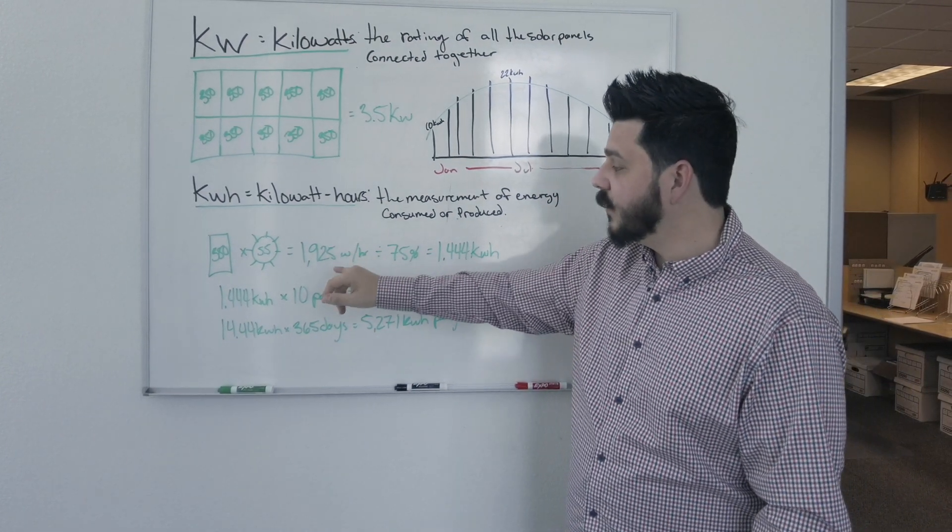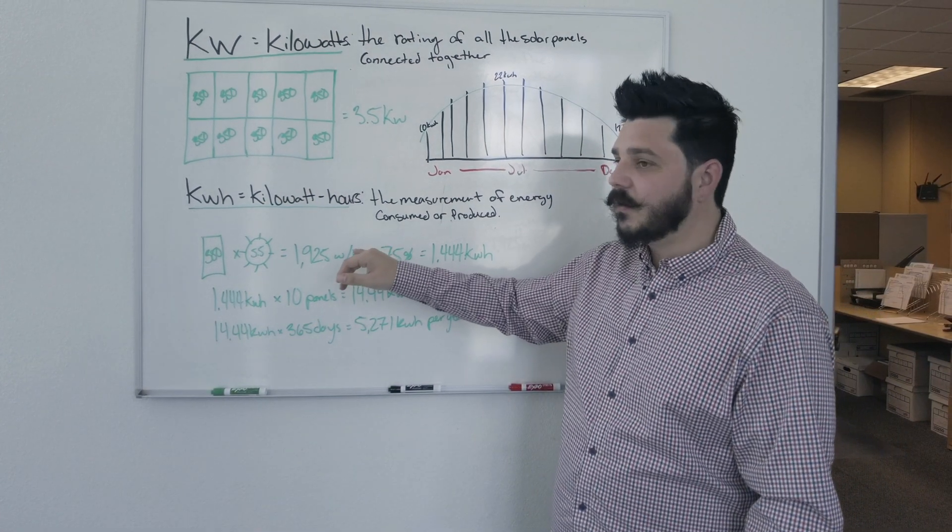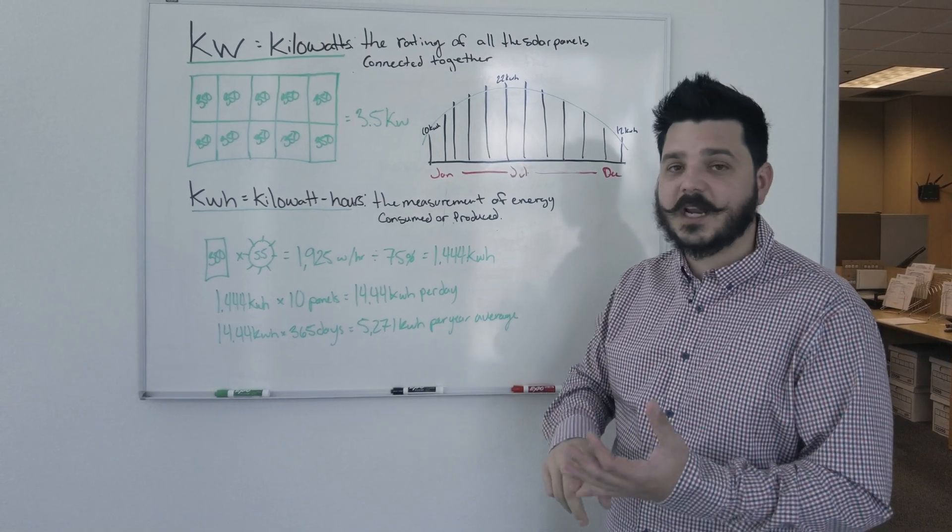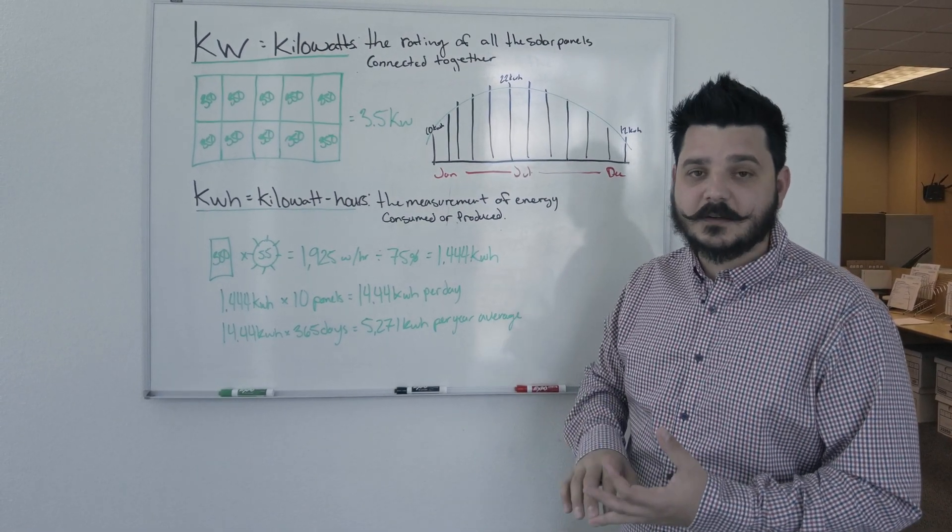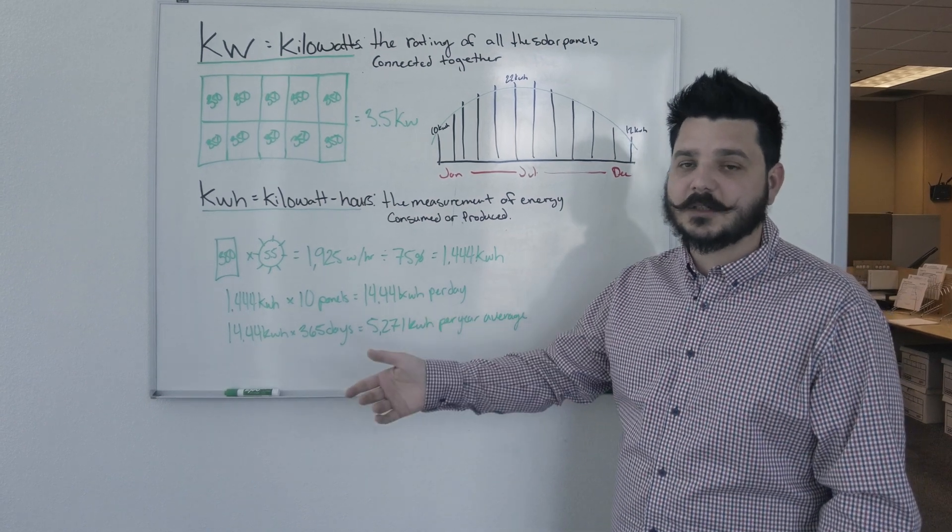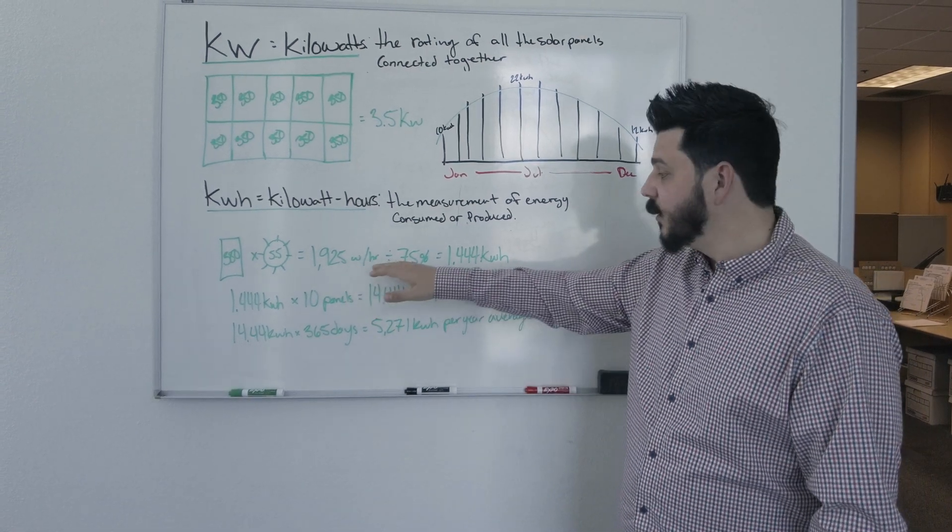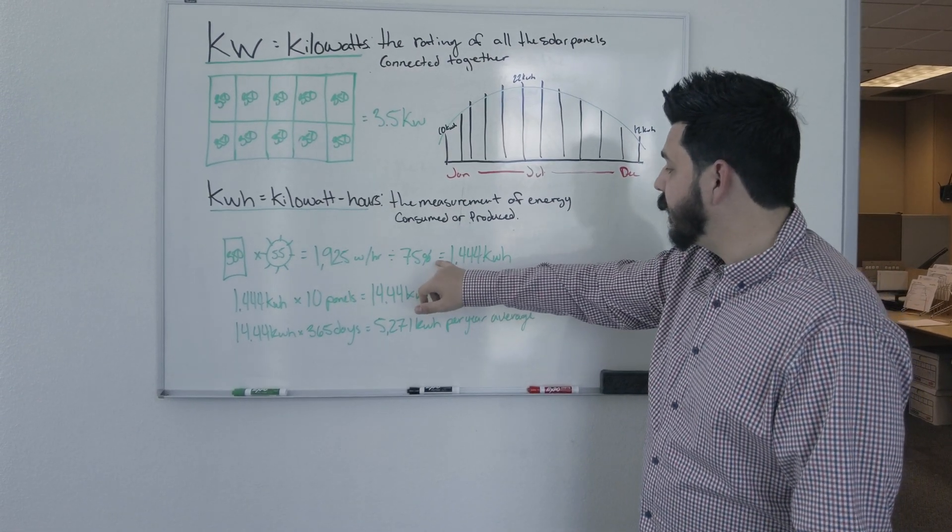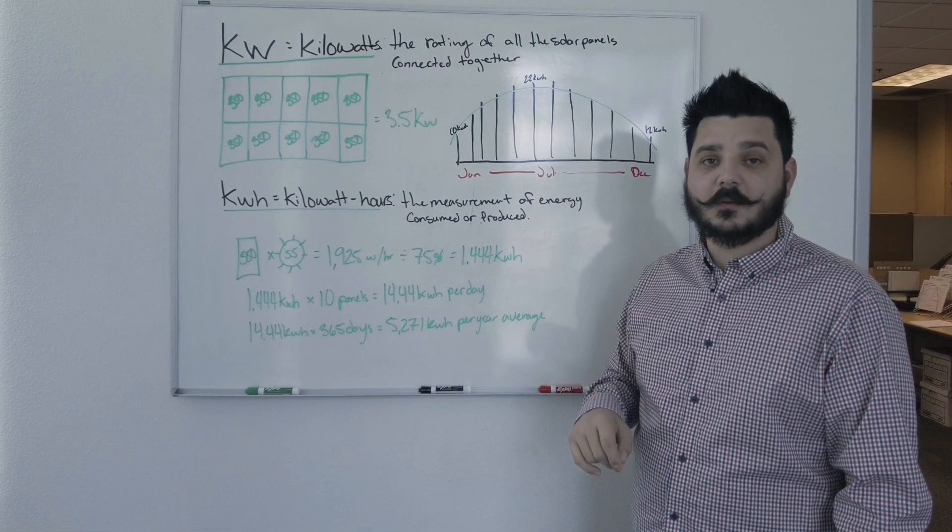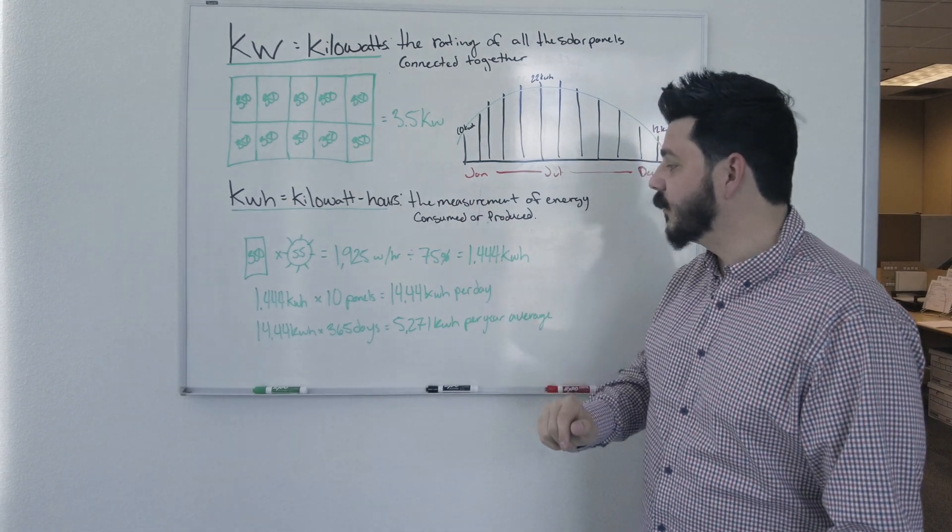Now, this is the maximum the system can actually produce, but it's not a realistic number. You'll rarely see anybody give you a bid for the maximum the solar system can actually output because you have shading variances, seasonal variances. There's a lot of variances that go into how much you'll actually get out of a panel. So we're going to divide it by 75%—we're going to be a little conservative here.